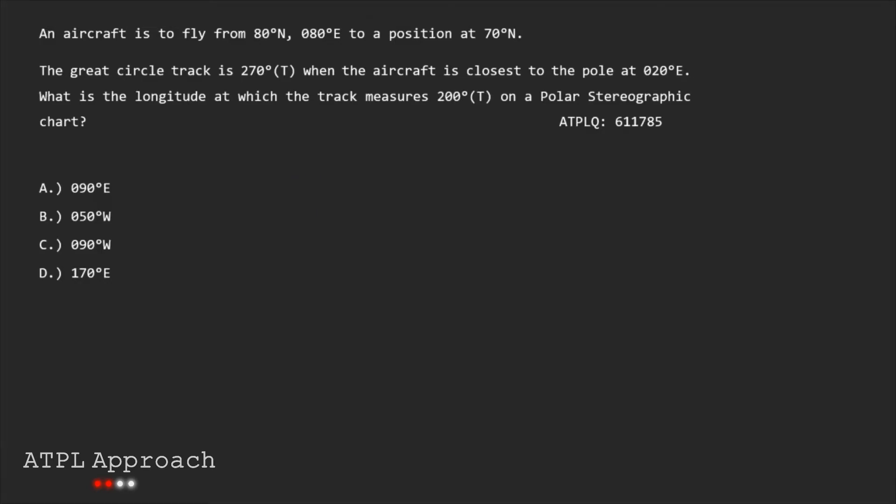So we're told that an aircraft is to fly from 80 degrees north 80 degrees east to a position at 70 degrees north. We're not told the longitude. Then it tells us that the great circle track is 270 degrees true when the aircraft is closest to the pole at 20 degrees east. Then it wants us to find the longitude at which the track measures 200 degrees true on a polar stereographic chart.